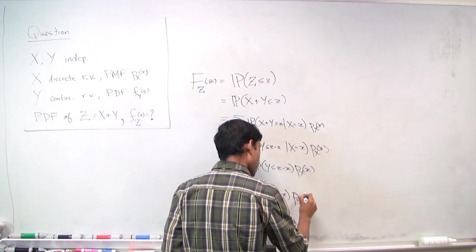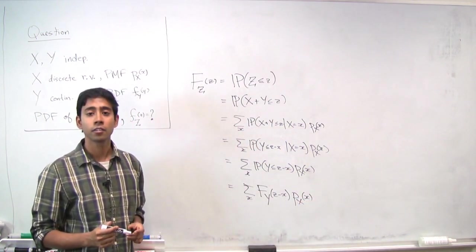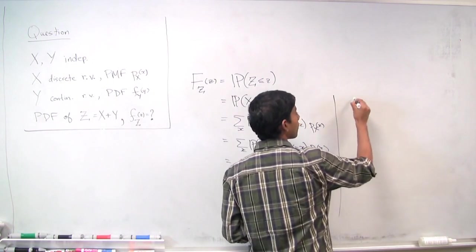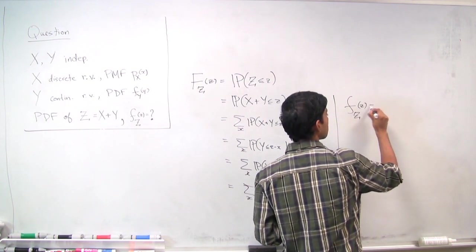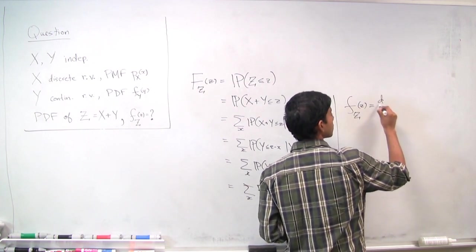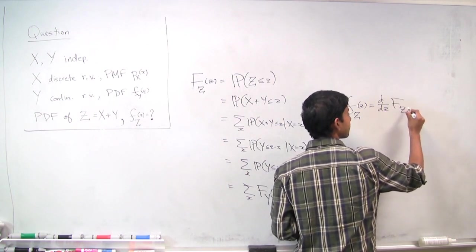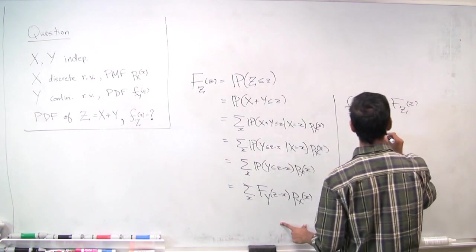So now we've simplified as far as we could. So let's take the derivative and see where that takes us. So the PDF of z is, by definition, the derivative of the CDF, which we just computed here.